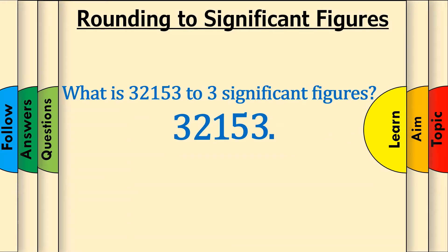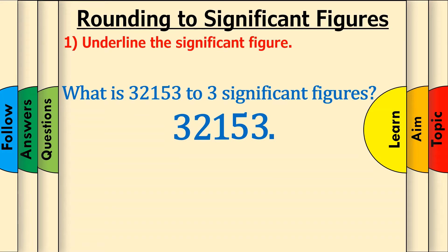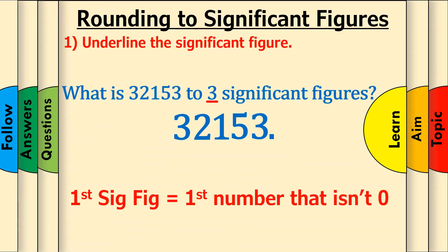Step 1: Underline the significant figure. Here, we want to round to 3 significant figures, so underline the third significant figure. The first significant figure is the first digit that's not a zero. The second, third and fourth significant figures and so on are the digits that come straight after it. In this case, the third significant figure is 1.